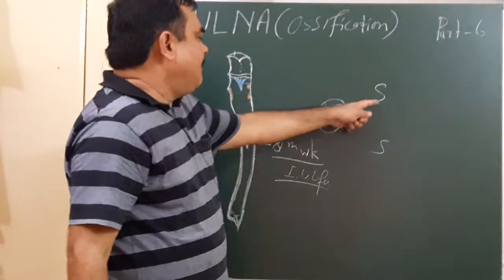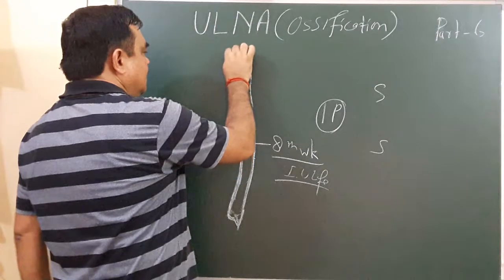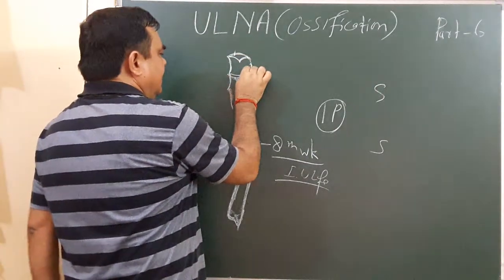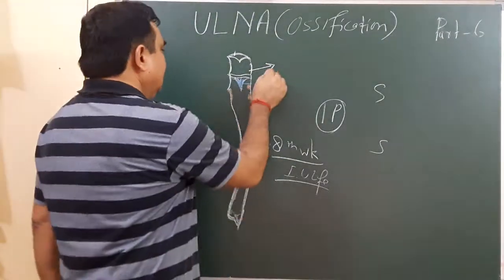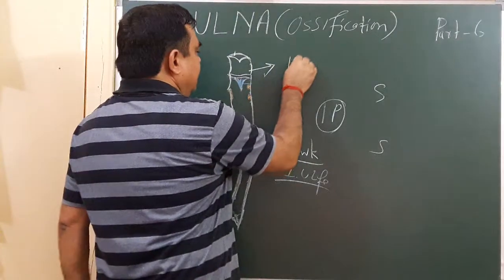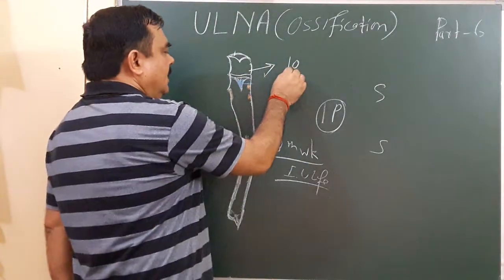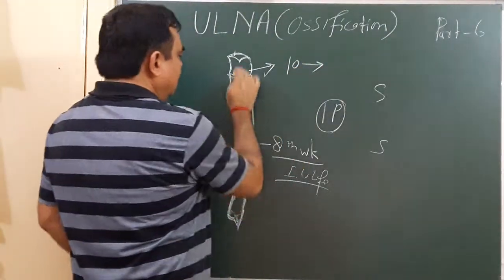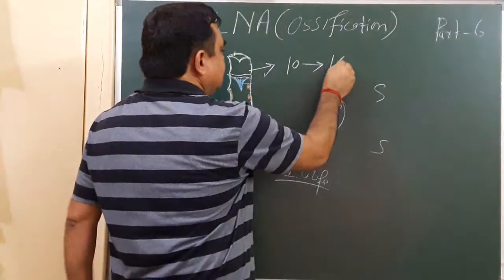For the upper end, it ossifies from secondary centers. The secondary center appears during the 10th year of life and fuses with the shaft during the 16th year.